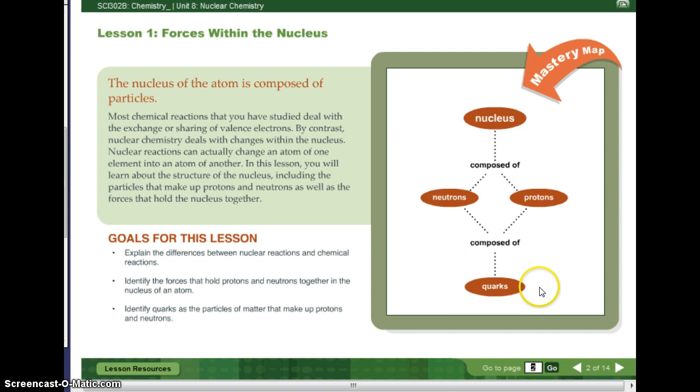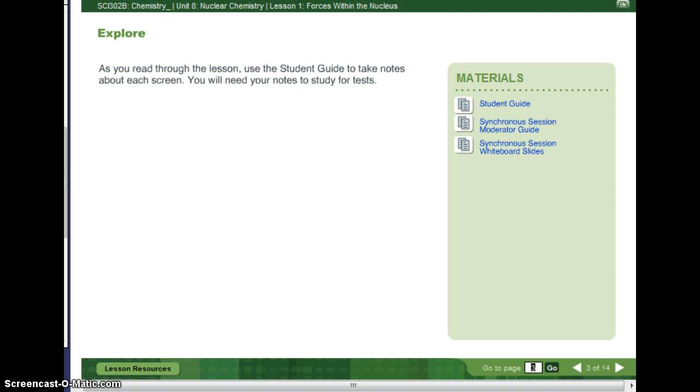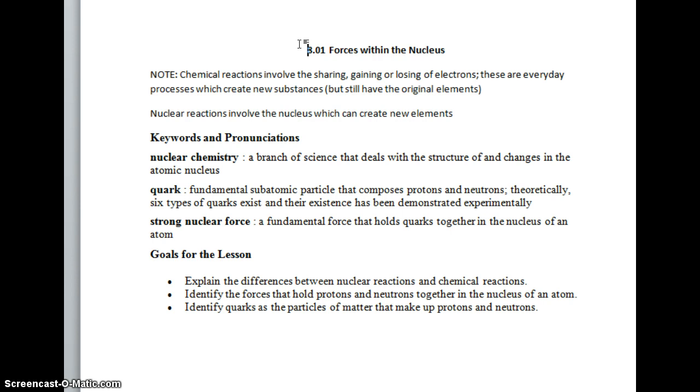And then we have the study guide. So this is what I added to my notes. I added our title that we're doing 8.01 forces within the nucleus. And I also put this note on here to remind us that chemical reactions involve the sharing, gaining, or losing of electrons. These are everyday processes which create new substances but still have the original elements. Remember when we had to balance chemical equations? We had to have three hydrogens on the right, three hydrogens on the left. We had to have five coppers on the right, five coppers on the left. Even though we rearranged it and made new substances, we still had the original elements.